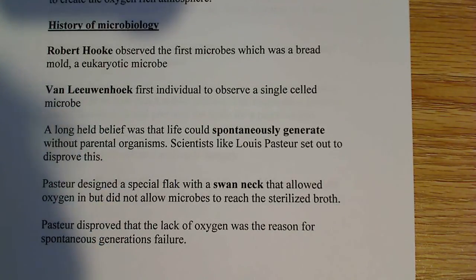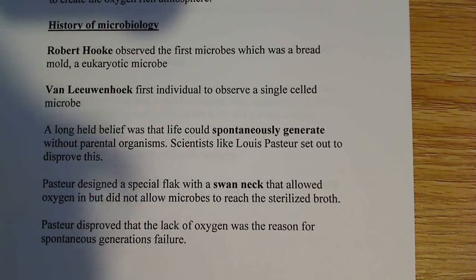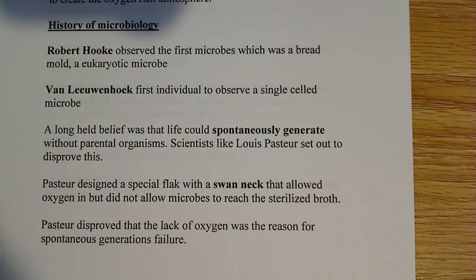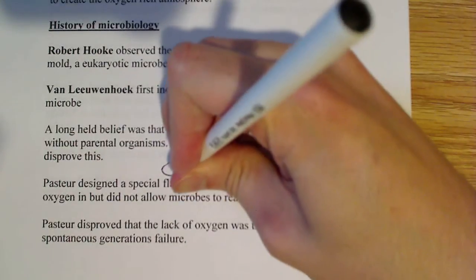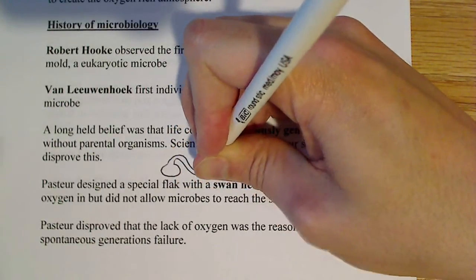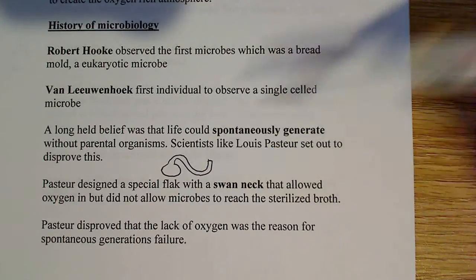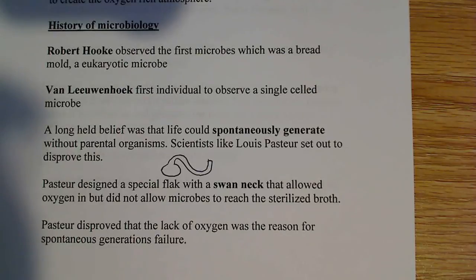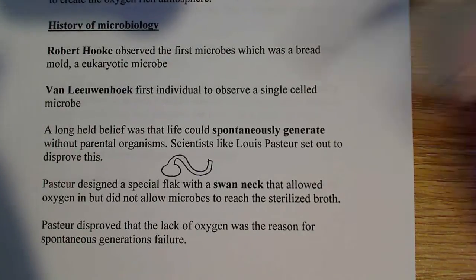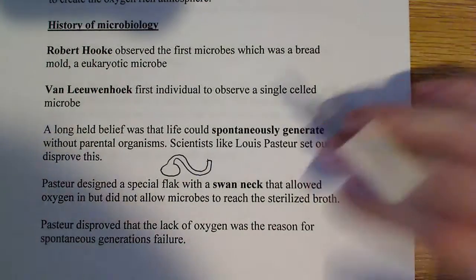After proving those two things, people still weren't convinced. They said spontaneous generation requires oxygen. So Pasteur came up with the idea of a swan-neck flask — essentially an S-shaped flask. What would happen is microbes, dust, and dirt would get caught in the S-shaped curve and be prevented from colonizing the broth. But it was still exposed to oxygen, so he could disprove critics who said it needed oxygen. That's his key contribution here.